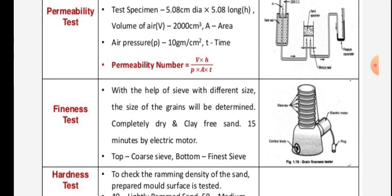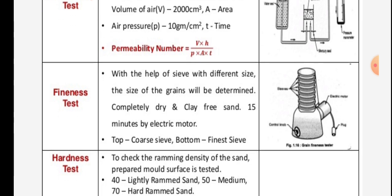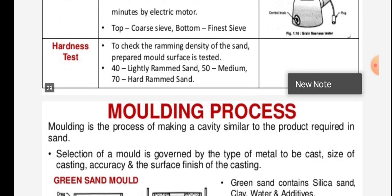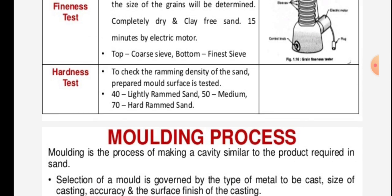The apparatus is shown in the figure. Fineness test: with the help of sieves of different sizes, the size of the grains is determined. Completely dry and clay-free sand is sieved for 15 minutes by an electric motor, from top coarse sieve to bottom fine sieve. The grain fineness tester is shown in the figure. Hardness test: this test checks the ramming density of the sand prepared mold surface. Values are: 40 for lightly rammed sand, 50 for medium, and 70 for hard rammed sand.